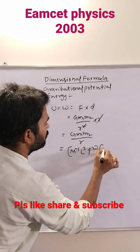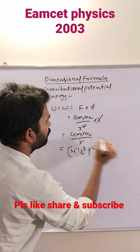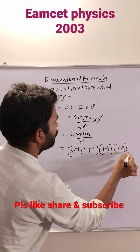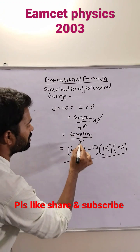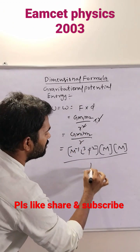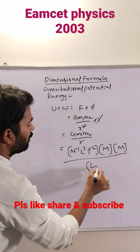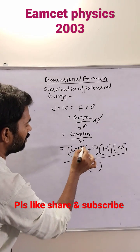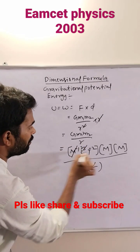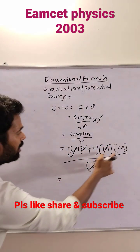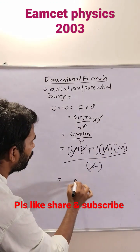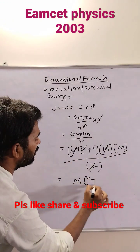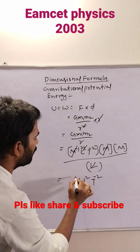So for M1 we can write M, for M2 we can write M, because M1 and M2 are masses. R is the distance, so I will write L. 1L cancels, L cube cancels — it will be square. M inverse, M cancels, remaining only 1M, and here L square, and here T power minus 2.